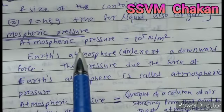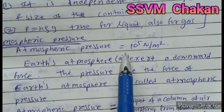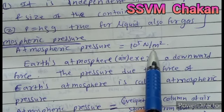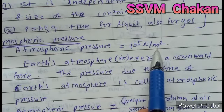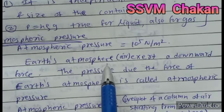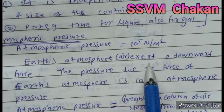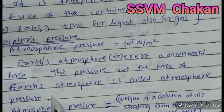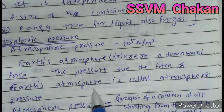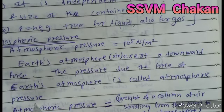Atmospheric pressure is equal to 10⁵ N/m². Earth's atmosphere exerts a downward force. The pressure due to the force of Earth's atmosphere is called atmospheric pressure.